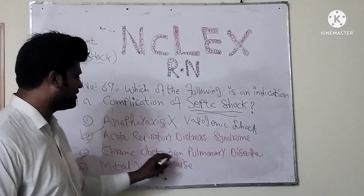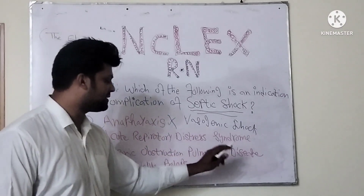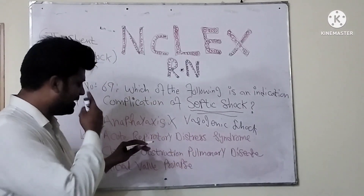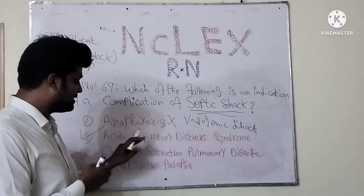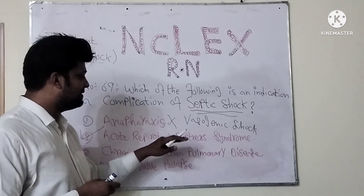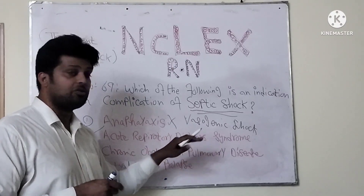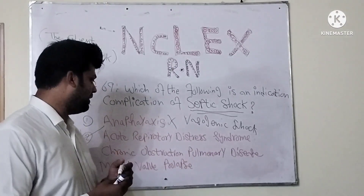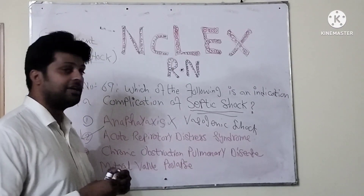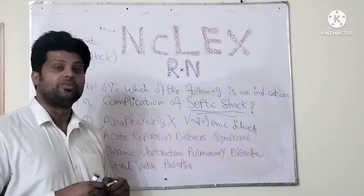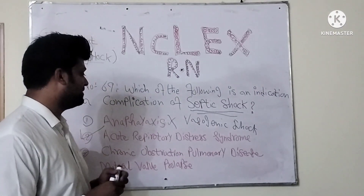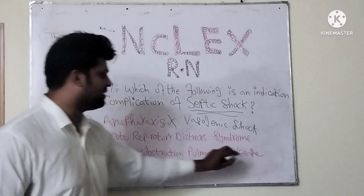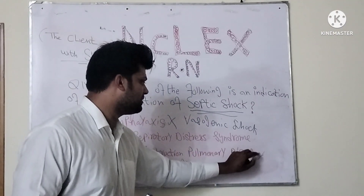Chronic obstructive pulmonary disease — when acute respiratory distress syndrome stays for a prolonged time, then chronic obstructive pulmonary disease will develop. So this is a wrong answer.